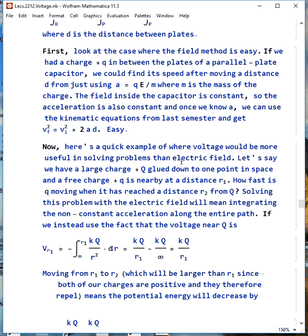Now, look at the case where the field method is easy enough. Let's say we have a charge plus Q in between the plates of a parallel plate capacitor. We can find its speed after moving a distance d from just using A equals QE over M. This is force divided by mass. The field is constant inside the capacitor, so the acceleration is also constant, and we can use the kinematic equations from first semester physics, once we know A, and we can say square of the final velocity is square of the initial velocity plus 2A times d. There's nothing particularly difficult about that.